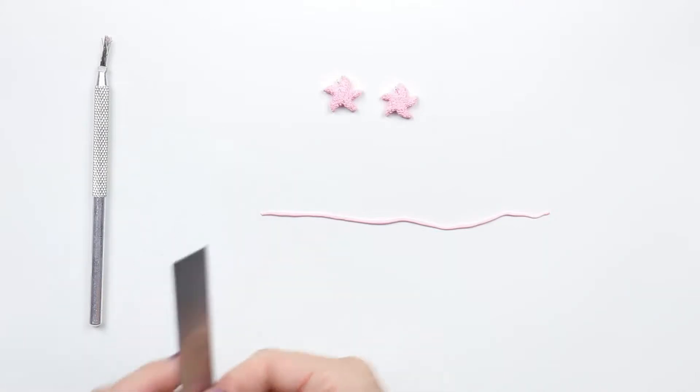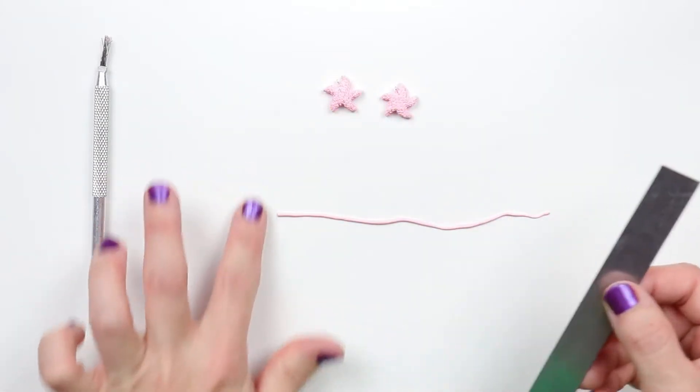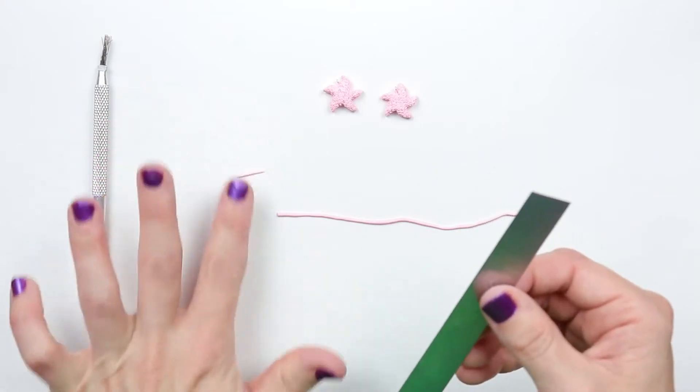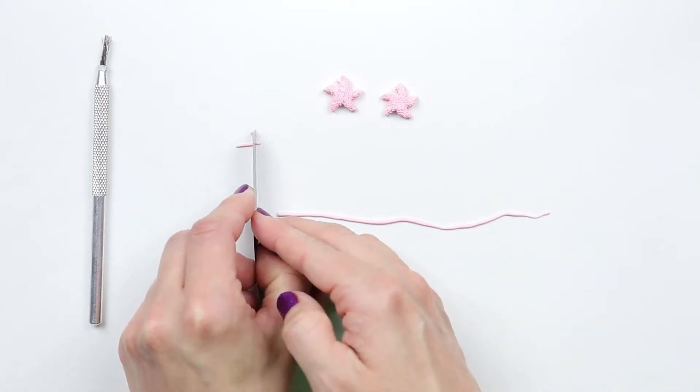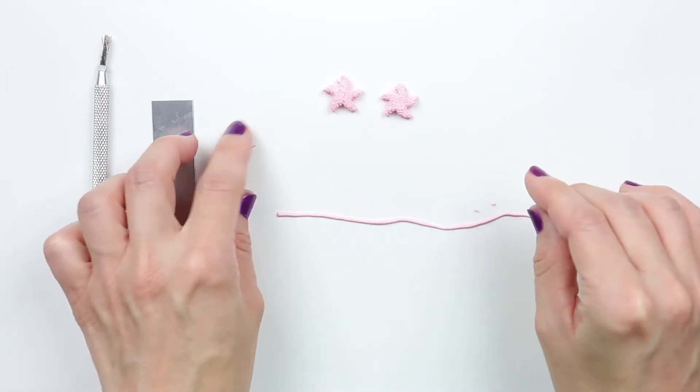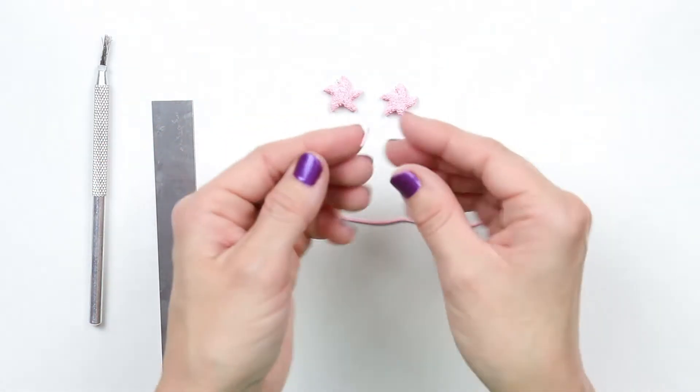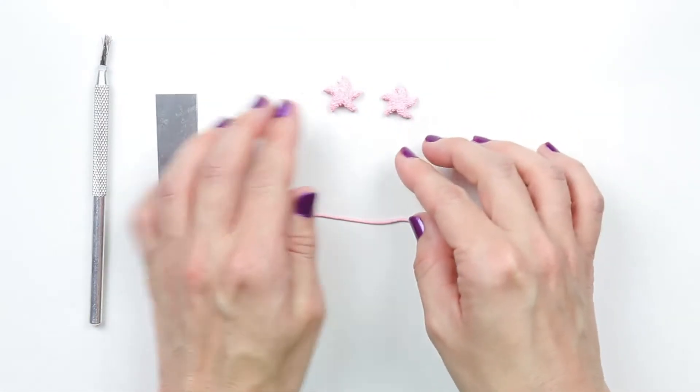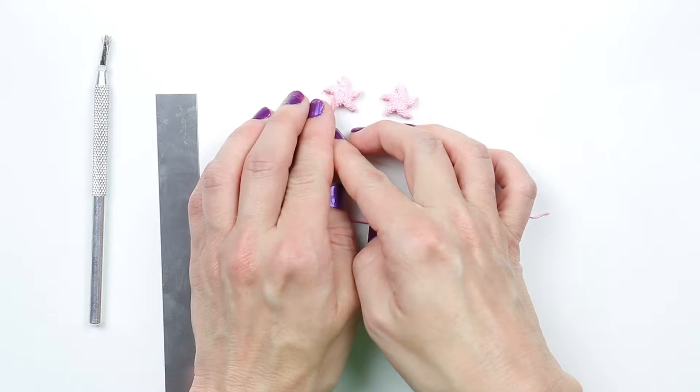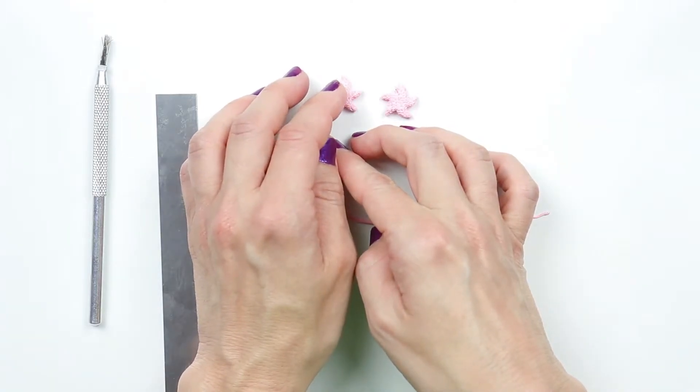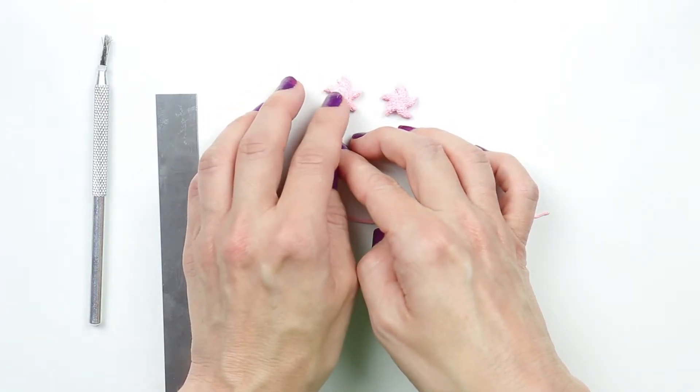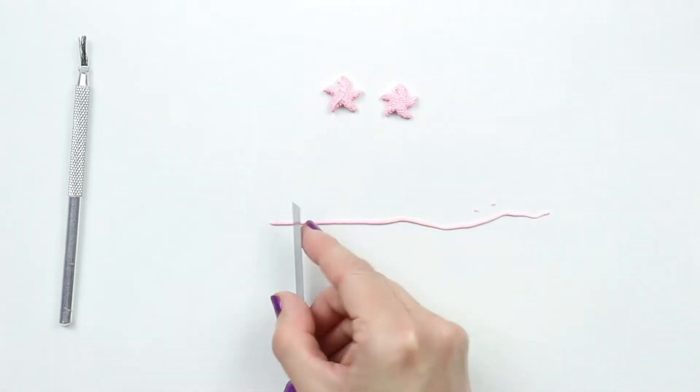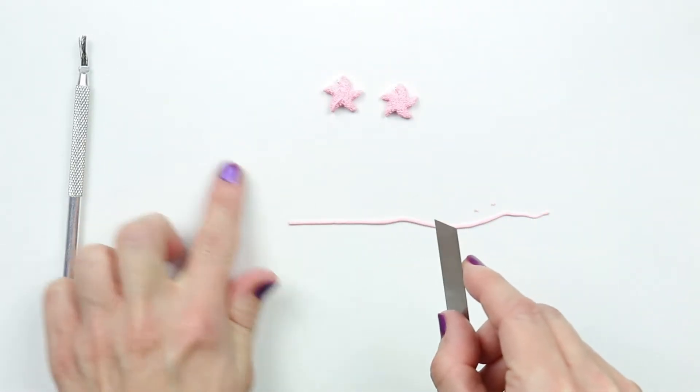Roll out some pink clay until it is long and thin, and then place this on each starfish limb. Start at the point and make it go towards the center. Do this for each starfish limb.